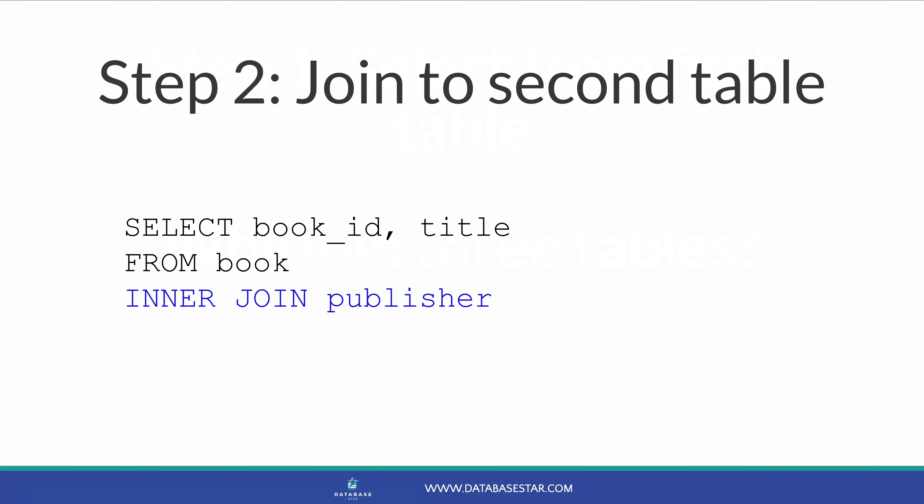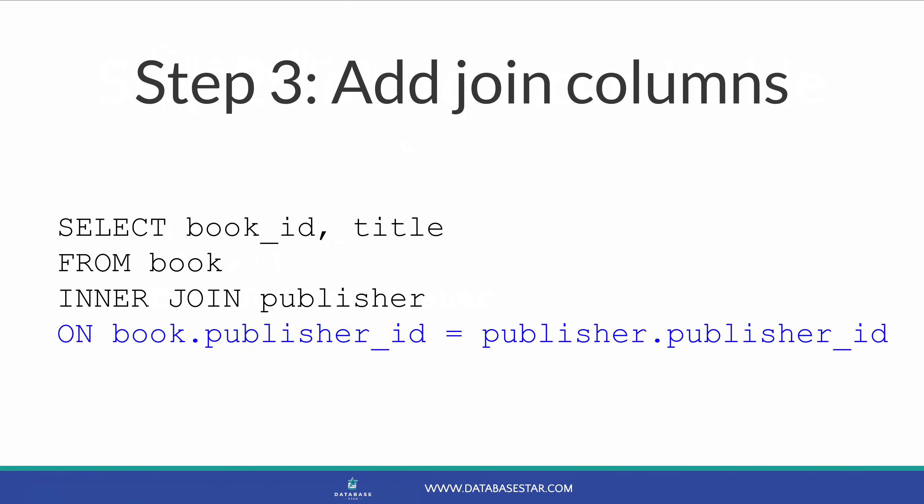Enter in your join type and then your table name. In this example, we will join to the publisher table. Now we've joined to the publisher table, we need to specify the columns. So enter in the columns that are to be joined on.